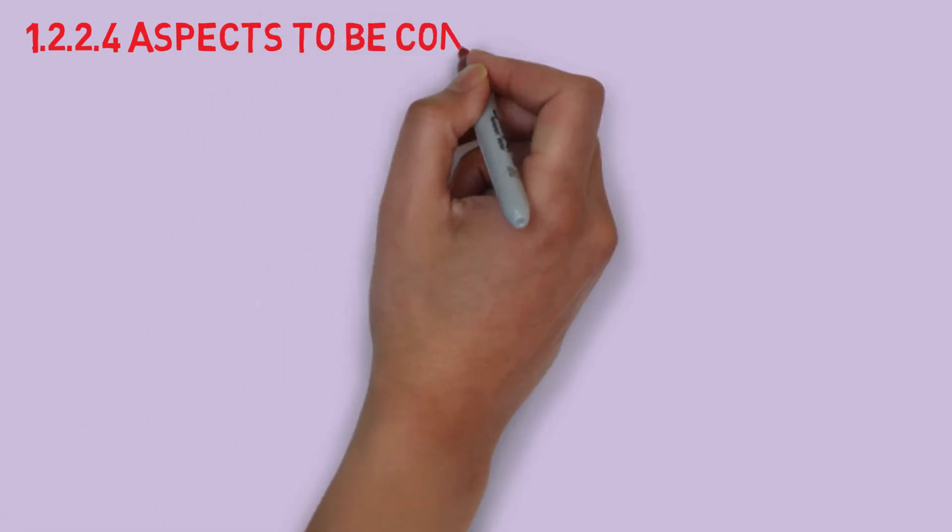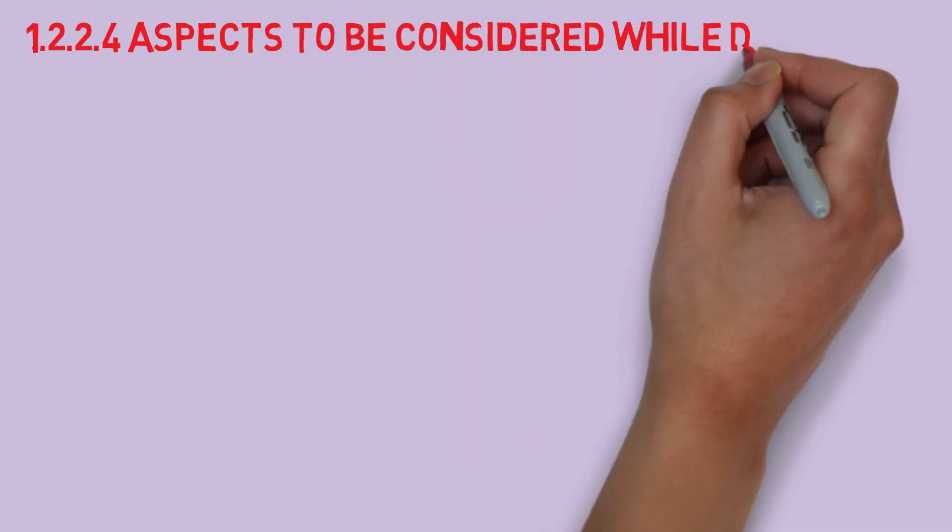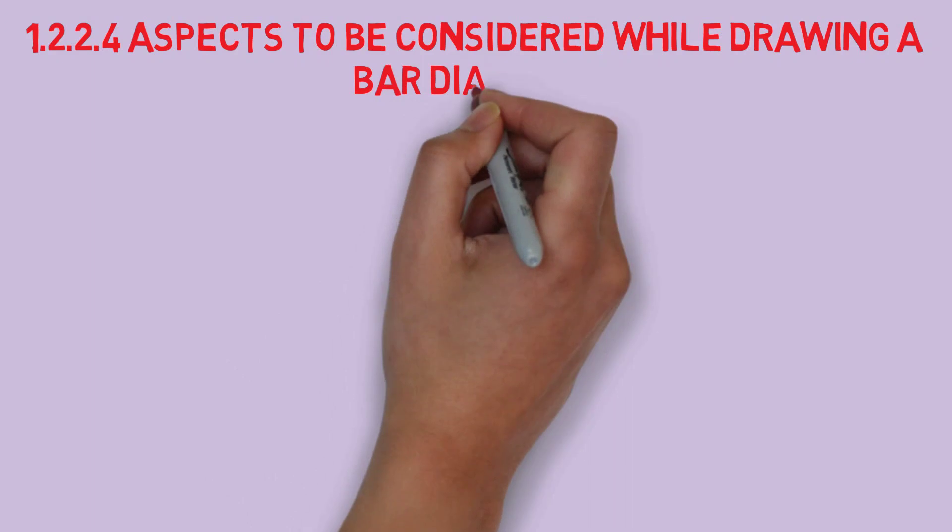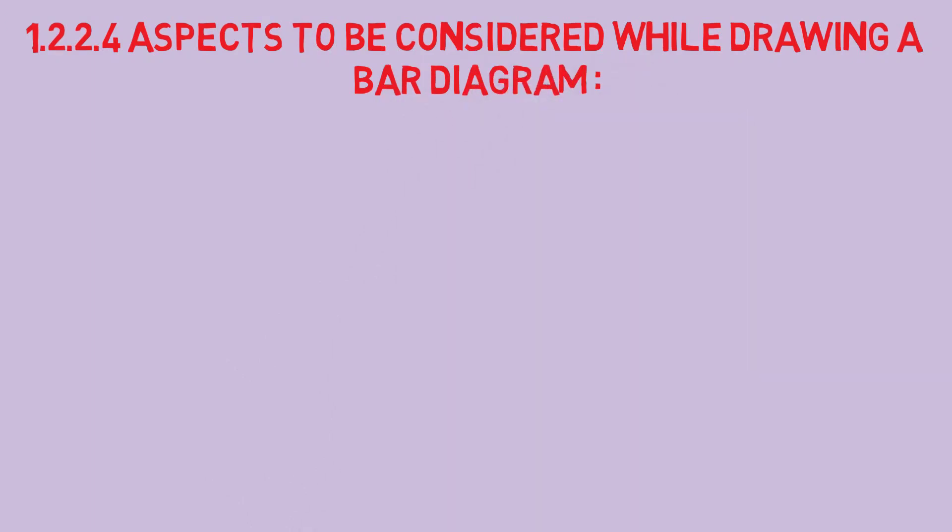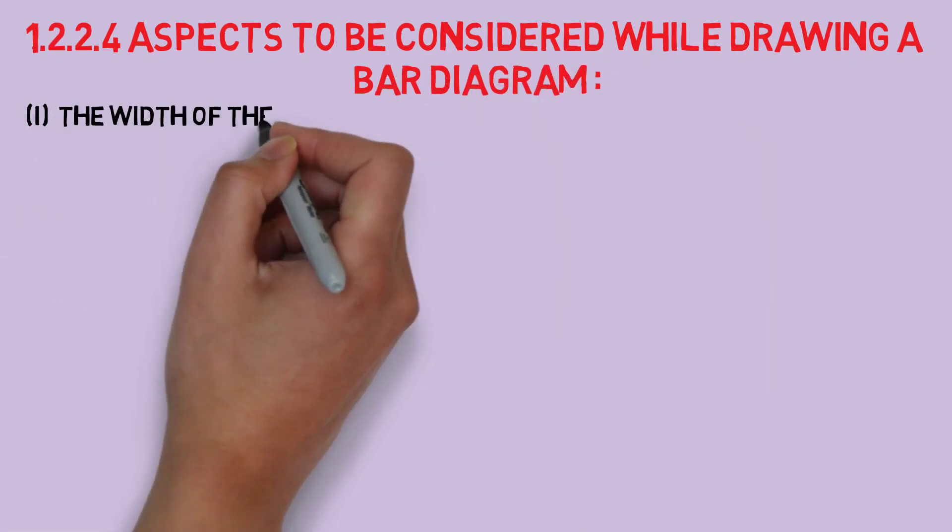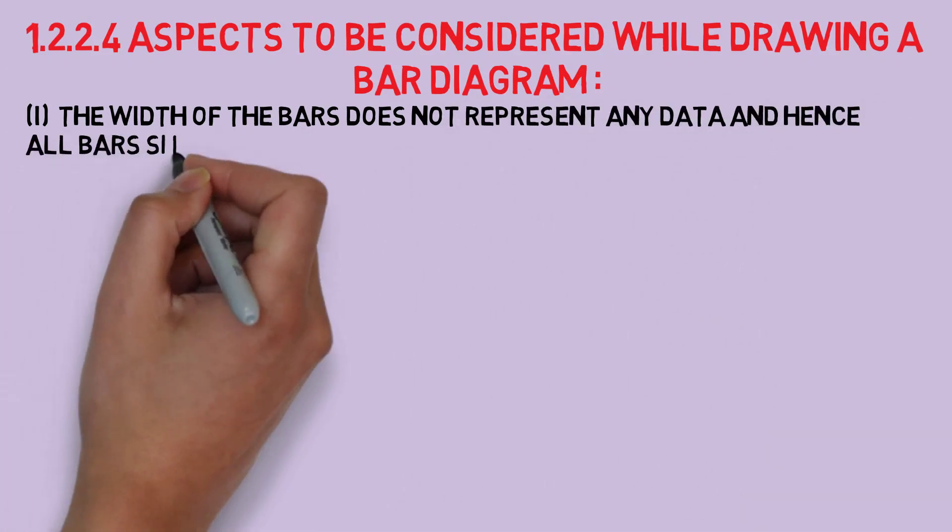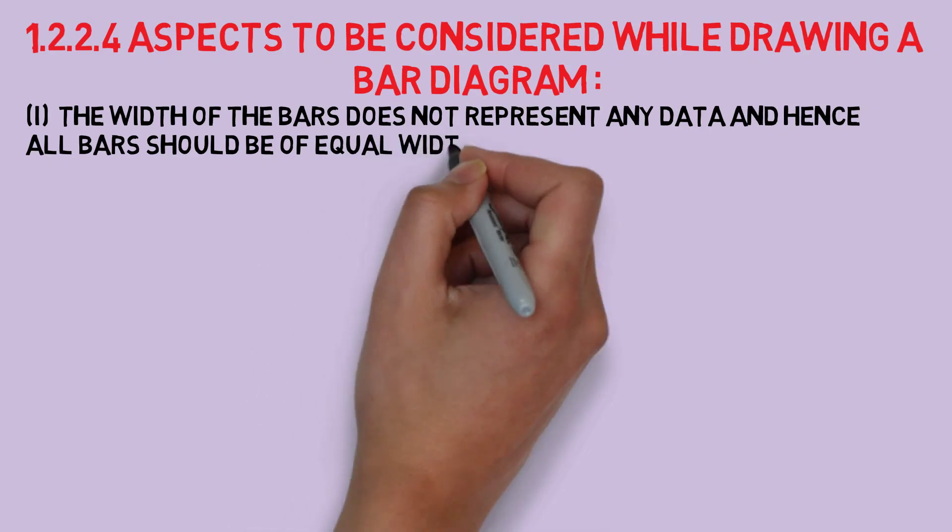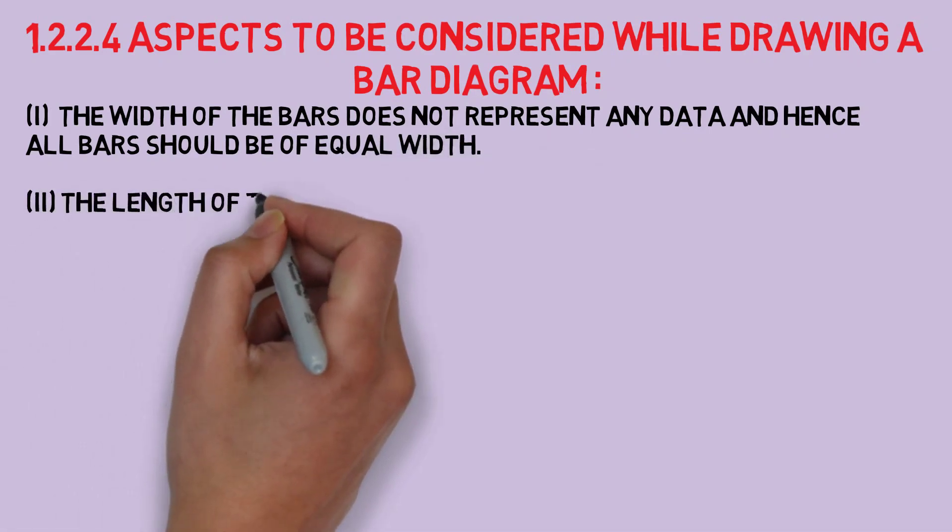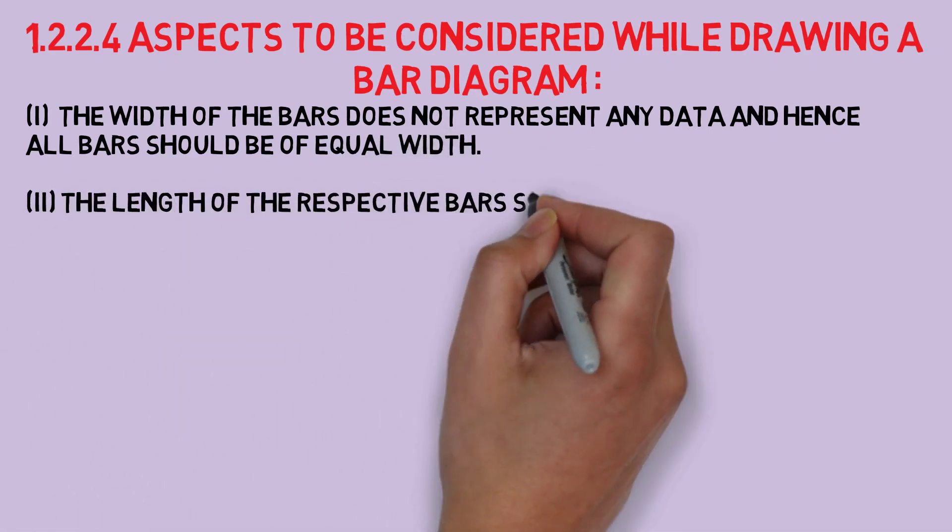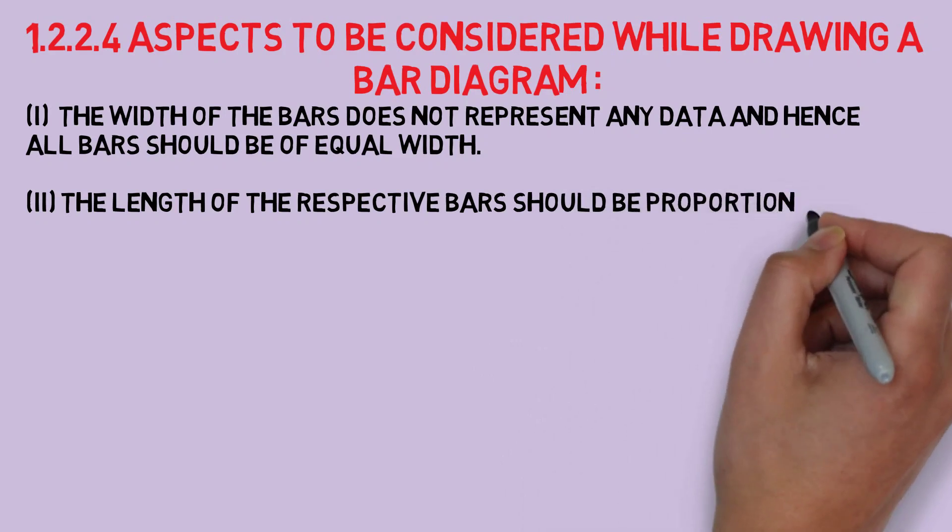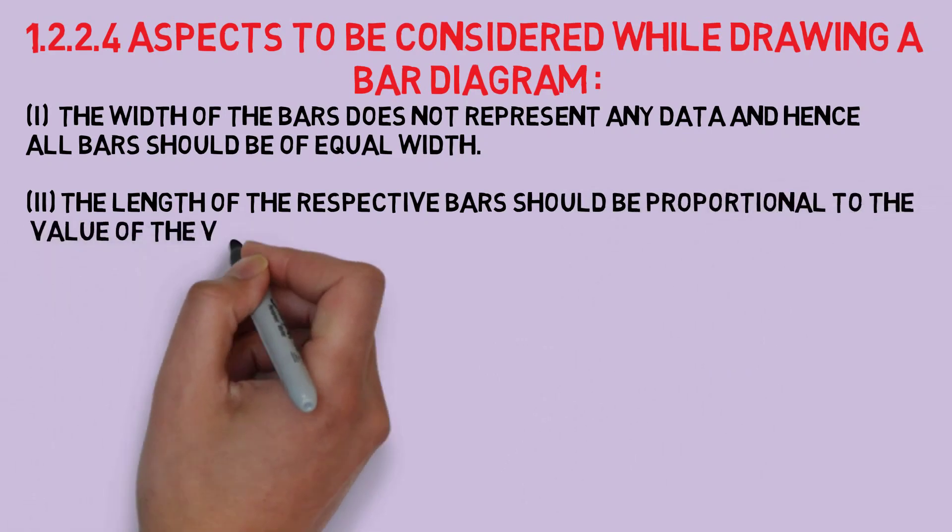Now we will move further to aspects to be considered while drawing a bar diagram. Number one: the width of the bars does not represent any data and hence all bars should be of equal width. Number two: the length of the respective bars should be proportional to the value of the variable which they represent.